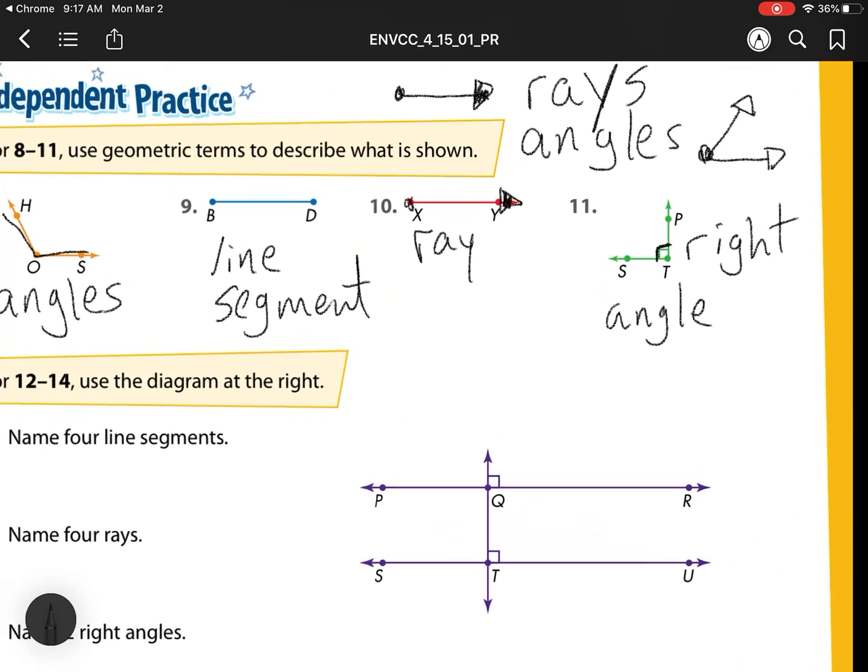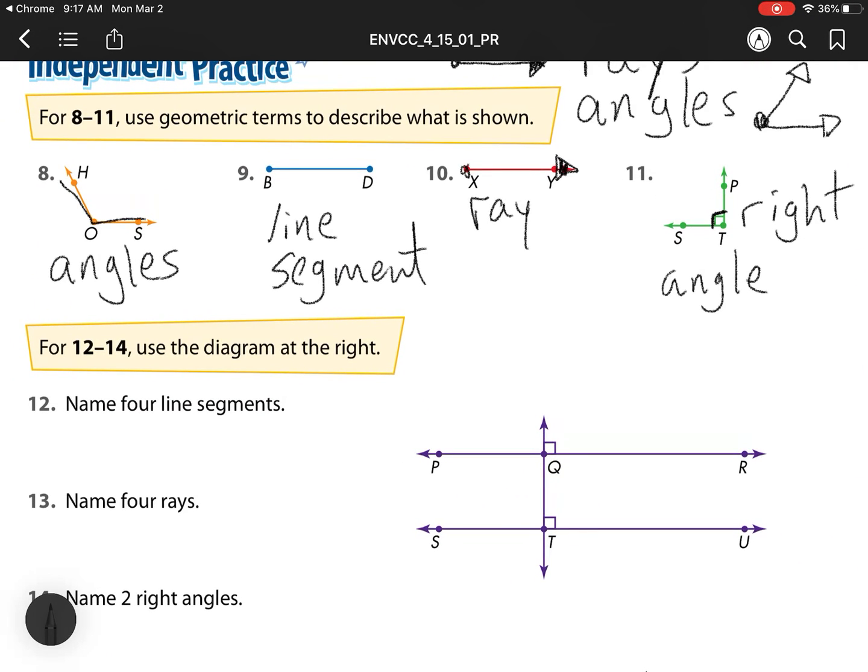Name four line segments. I have the line segment of P to Q, and I put that line above it. I have a line segment from S to T and put that line segment above it. I have a line segment from Q to T and put that line segment above it. And I have that line segment of T to U and put that above it. There's many more I could have done. I could have done P to R, Q to R, but it's just asking for four.